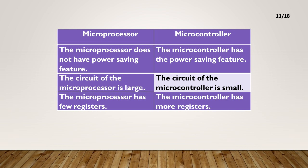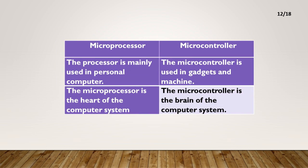The microprocessor has few registers. The microcontroller has more registers. The microprocessor is mainly used in personal computers. The microcontroller is used in gadgets and machines. The microprocessor is the heart of the computer system. The microcontroller is the brain of the computer system.